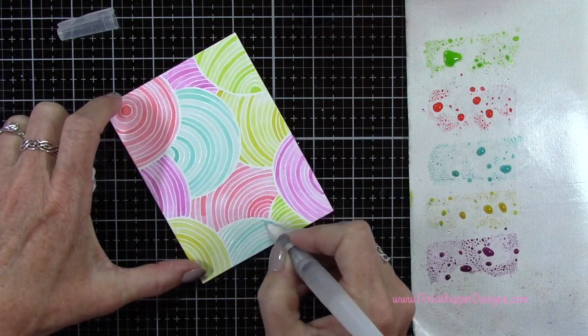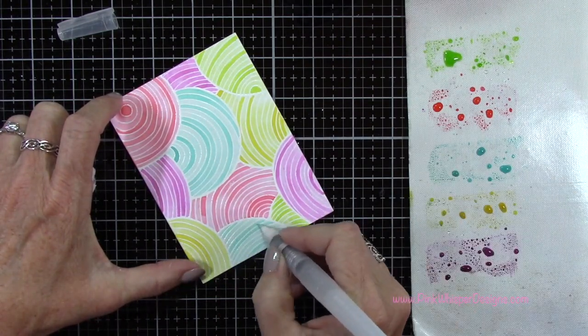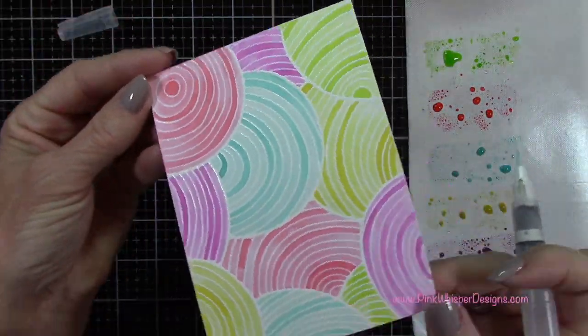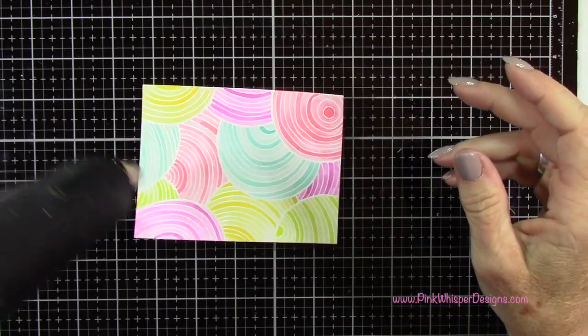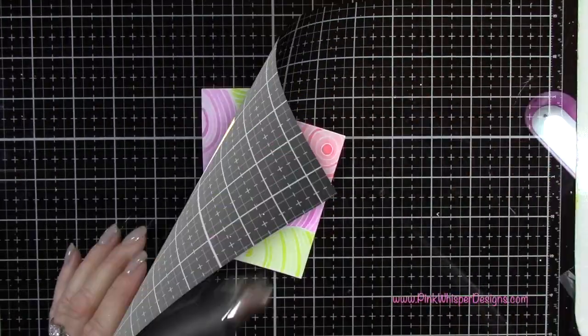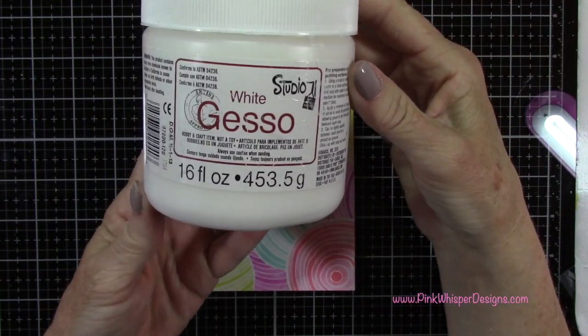So now we pretty much have this background completely done. Now the paper is quite wet at this point because we've added so much water so what I want to do is just grab my heat tool and just simply heat set this quickly and you could do some heating from the back of the paper as well.